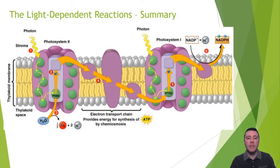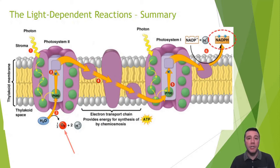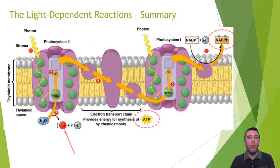Here is a summary of the light-dependent reactions. Water is a reactant and is consumed by the light-dependent reactions, and oxygen gas is a product, which ultimately is released into the atmosphere. The light-dependent reactions also form NADPH, electron carriers, and ATP, high-energy molecules. The ATP and NADPH, however, are temporary, since they're going to be used up in the forthcoming Calvin cycle. For this reason, we do not identify ATP and NADPH as net products of photosynthesis.